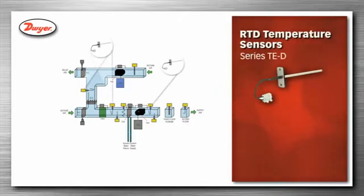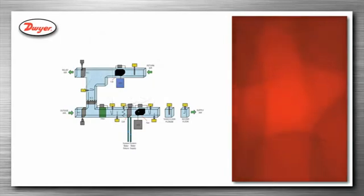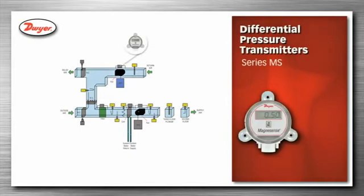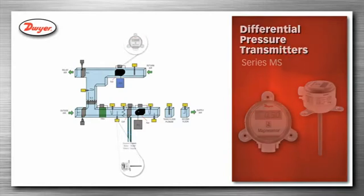Temperature sensors, series TE-D RTD temperature sensors, and series TE-A averaging RTD temperature sensors, are inserted into the duct and used to monitor the supply air, mixed air, and exhaust air temperatures. Differential pressure transmitters, series MS, are used with a static pressure sensor or with an inherent static probe to monitor discharge air and mixing air duct static pressures.